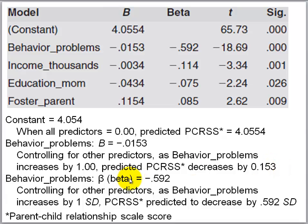That is the basic advantage of the betas — they do convey size of association, and size of association for beta can be interpreted using the same guidelines as for the correlation coefficient r. The beta for behavior problems is minus 0.592. Controlling for other predictors in the equation, as behavior problems increases by one standard deviation, predicted parent-child relationship score decreases by 0.592 standard deviations.